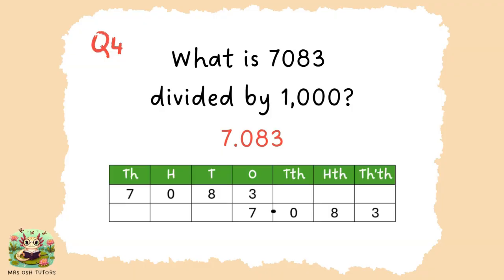Question four. We want to think about using a place value chart. Some children will have fallen into the trap of trying to use a long or short division method, but it's simpler than that. Think of it in a place value chart. We know the number is getting smaller because it's being divided, and there are three zeros in 1000, so we're going to move the number three places along. When we do that, our answer is 7.083.